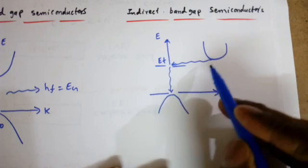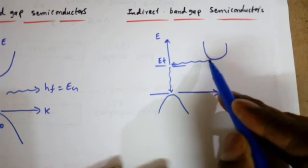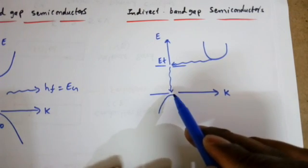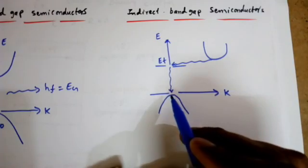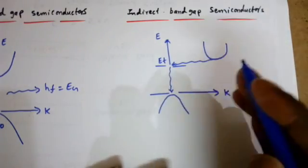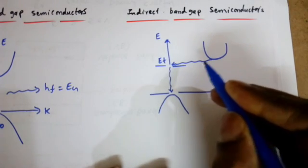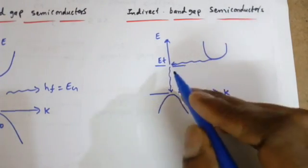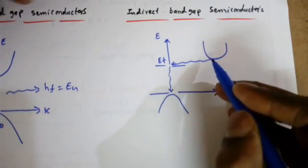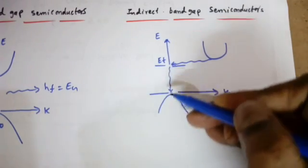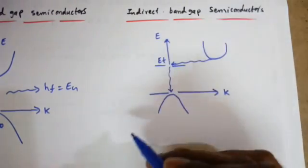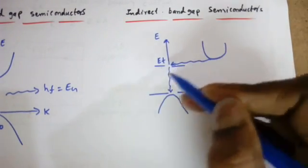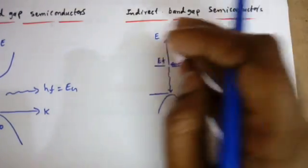In indirect bandgap semiconductors, the minimum energy level of the conduction band occurs at a different value of k compared to the maximum energy level of the valence band. This conduction band minimum is at k equal to 0, while the valence band maximum is at some different k value, maybe 1 or 2. If the electron tries to move from the conduction band minimum to the valence band, it requires some momentum — a different k value — so it first goes to some defect state, then from that defect state it falls to the valence band. This deflection causes it to radiate energy in the form of heat in the lattice itself.